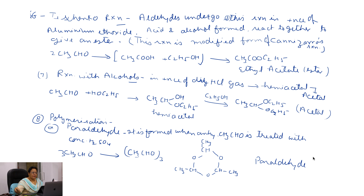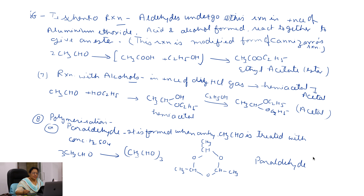The next important property is the Tishchenko reaction. This reaction is a modified form of the Cannizzaro reaction. In this reaction, one molecule of aldehyde is oxidized and one is reduced, and finally we get an ester, because when an acid and an alcohol react together they give an ester. Aldehydes undergo this reaction in the presence of aluminum ethoxide to form an ester.